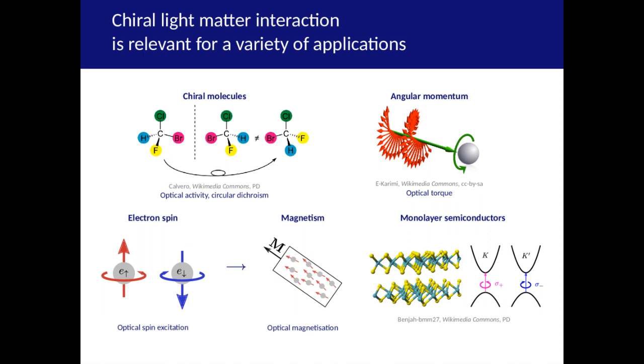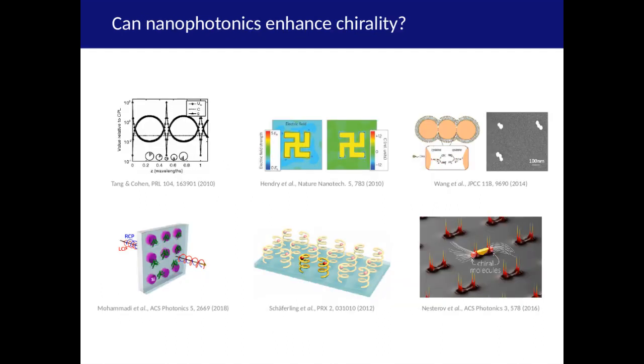But unfortunately, many of these chiroptical interactions are very weak, making the practical applications difficult. So we asked the question, can we use nanophotonics to enhance chirality to strengthen these effects?